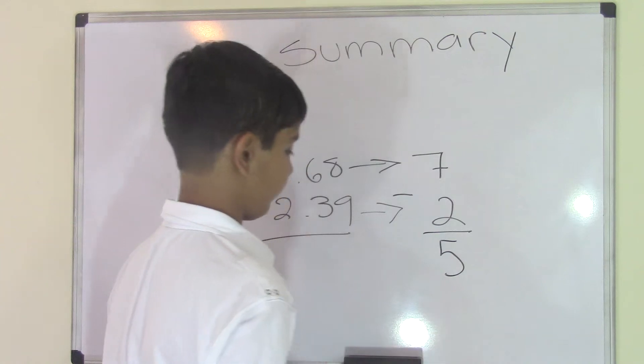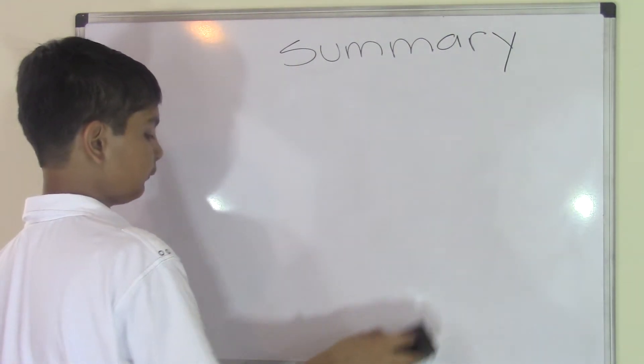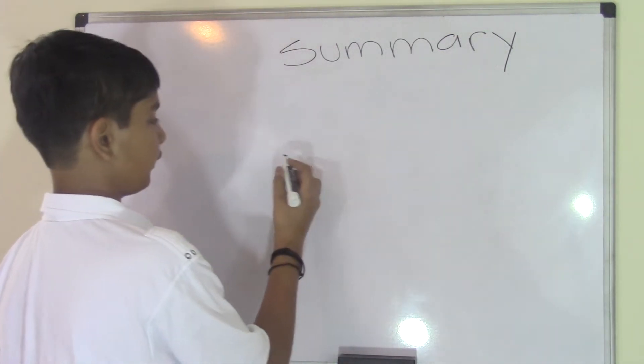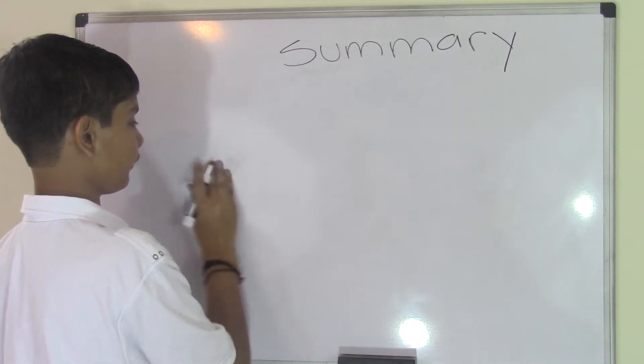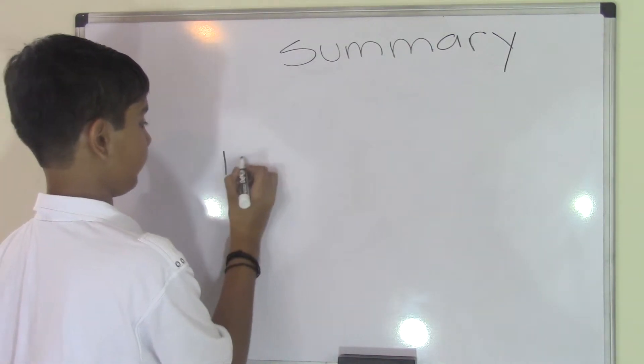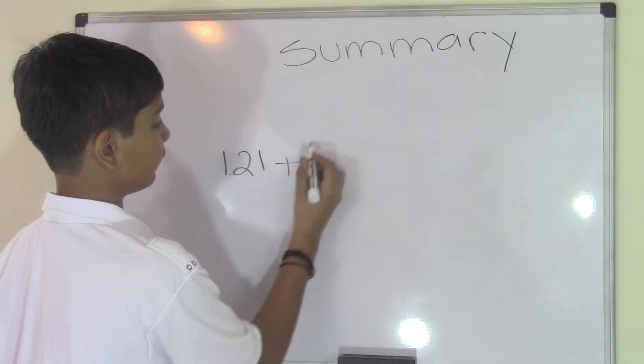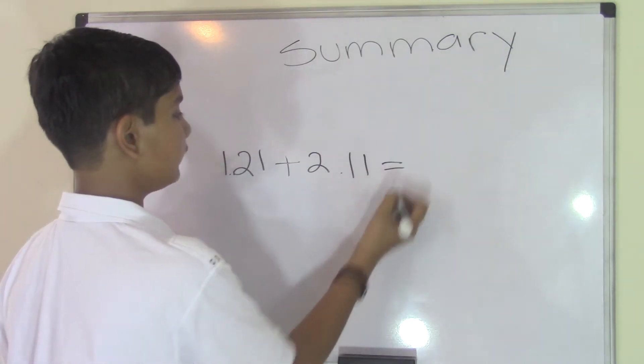Now let's do some addition of decimals. When we went over the video, we said that we get problems in horizontal form, for example, 1.21 plus 2.11. To do this, we have to align the decimal points vertically.